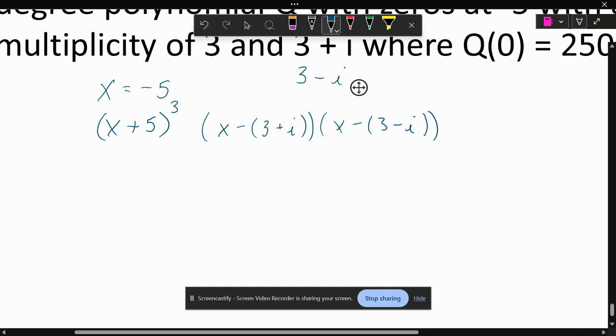So I'm going to distribute. I'm going to make this x minus three minus i and x minus three plus i. Essentially they just switch places.